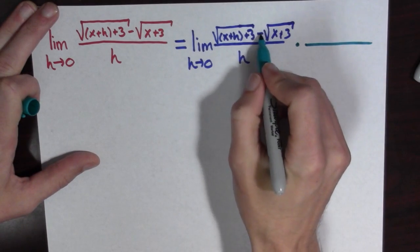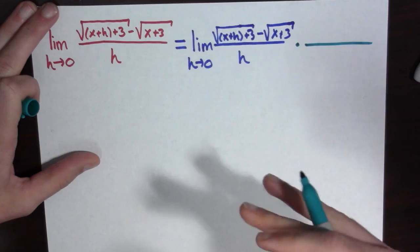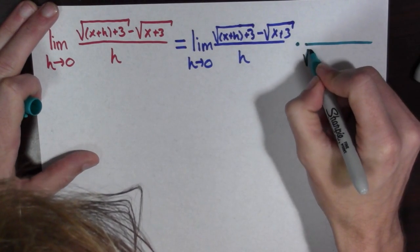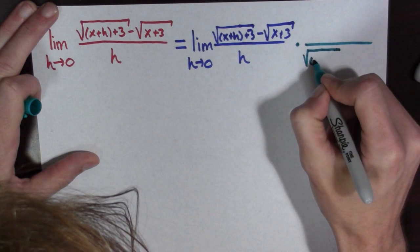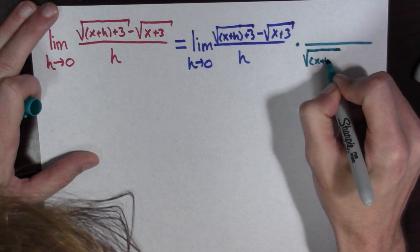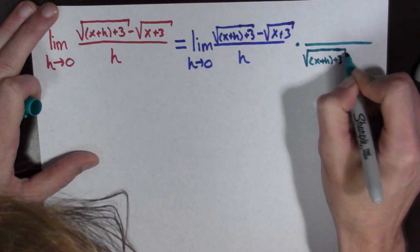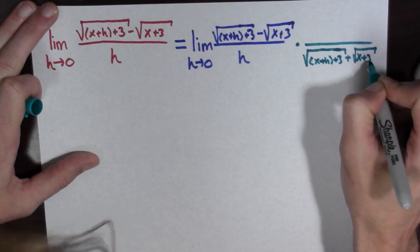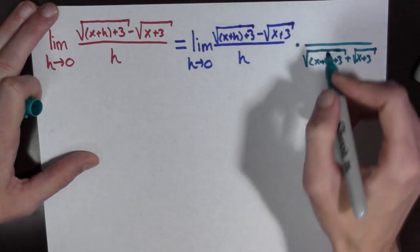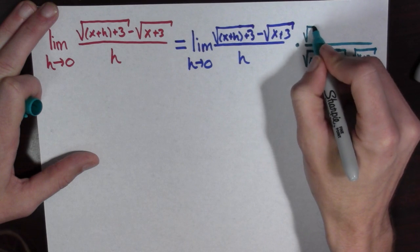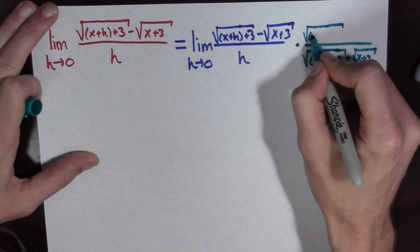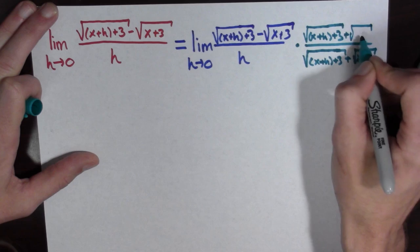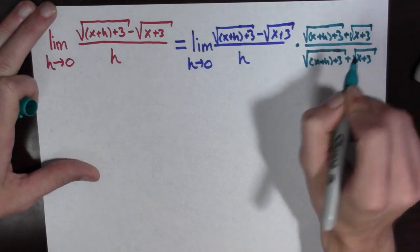All you do is just change the sign. If it's negative, change it to positive; if it's positive, change it to negative. So we're going to have the square root of x plus h plus 3, plus the square root of x plus 3. And in the denominator, we have the same thing: the square root of x plus h plus 3, plus the square root of x plus 3.